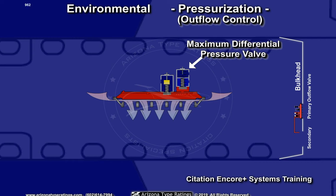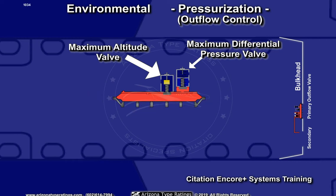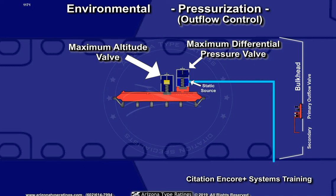Both valves also have a maximum altitude limit valve that will restrict the cabin altitude to approximately 13,000 feet, in the event of an under-pressurization condition. The pressure relief valve receives outside pressure information from a static port and compares it to cabin pressure.